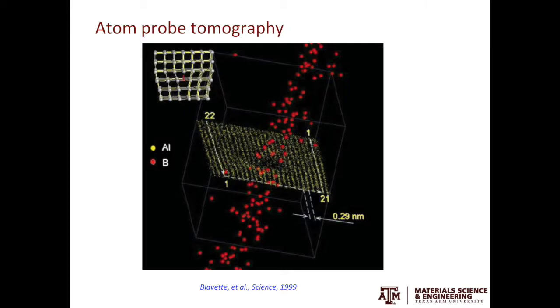The last experimental technique we are going to cover in this video is atom probe tomography. This is a very famous figure from Blavet published in Science in 1999. You can see the dislocation in two ways. The first is through the Cottrell atmosphere. You have boron segregation in the aluminum alloy at the dislocation core. The second way is to draw the Burgers circuit.